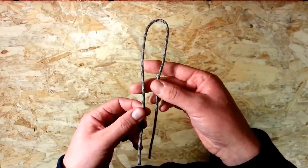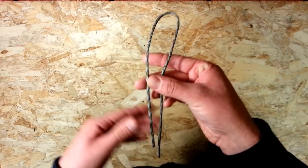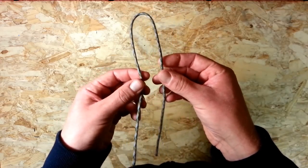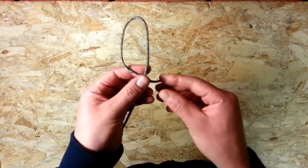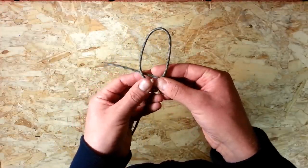So with the two strand snake knot what you want to do is have both your cords facing towards you like this and you're going to take your left cord and put it over the right hand one and back around behind both cords.